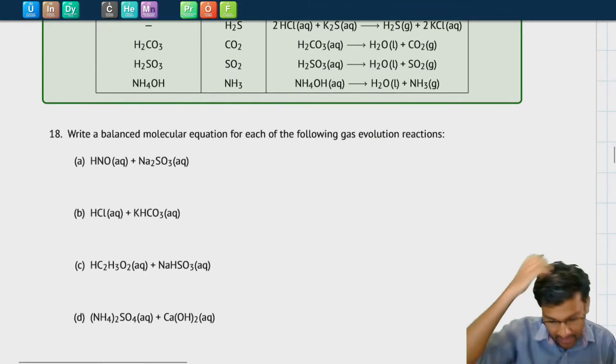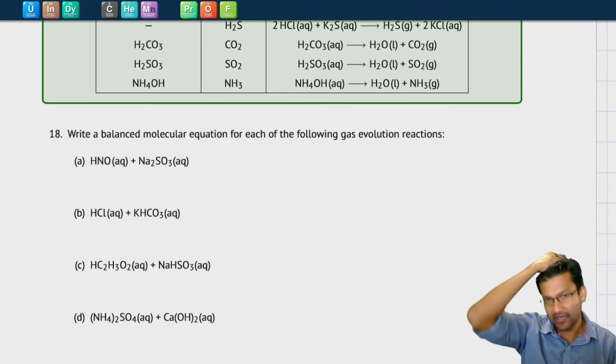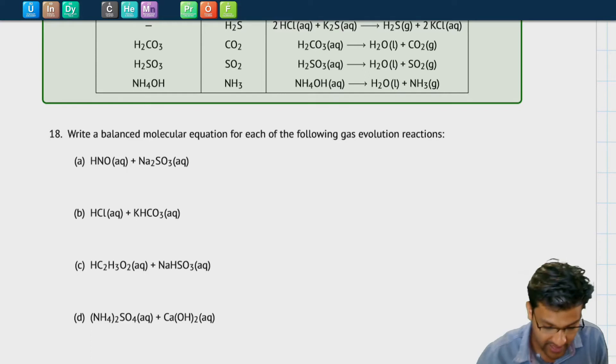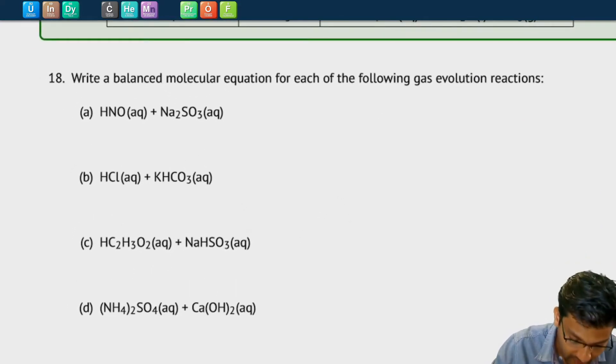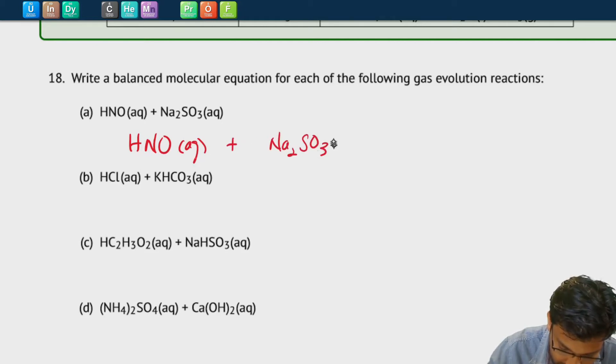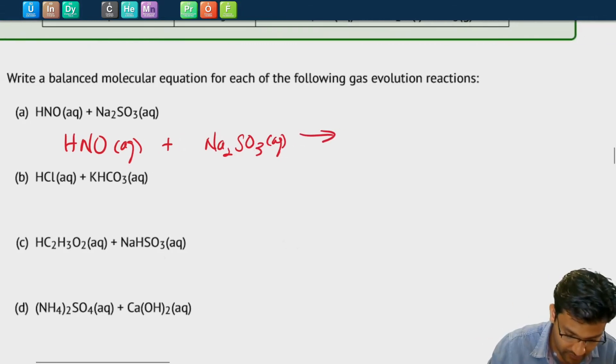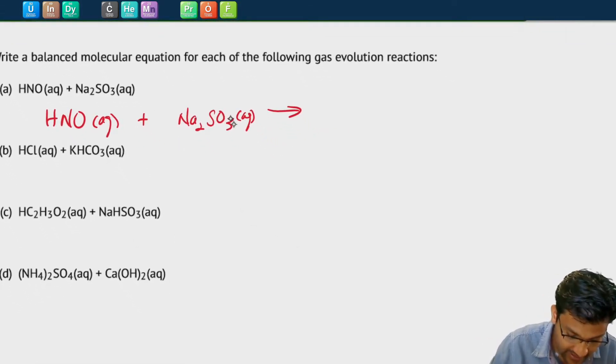Let's look at some examples of gas evolution reactions and write the balanced equations for those reactions. I'll do A as an example and you can do the others. In this reaction we have HNO3 aqueous plus Na2SO3 aqueous in a reaction. This is a double displacement reaction where the H+ ions will combine with the SO3 2- ions, the sulfite ions.